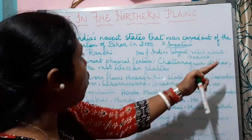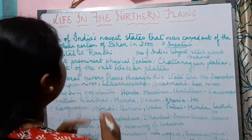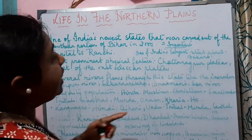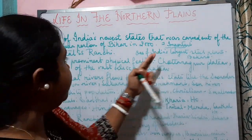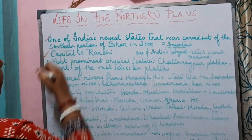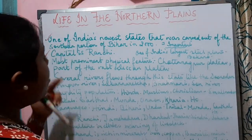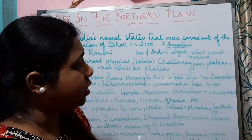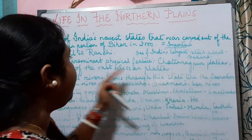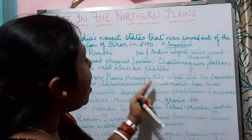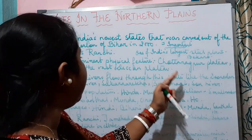To summarize, Jharkhand is one of India's newest states, carved out of the southern portion of Bihar in the year 2000. The capital is Ranchi, and the most prominent physical feature is the Chhota Nagpur Plateau, which is a part of the vast Deccan Plateau.